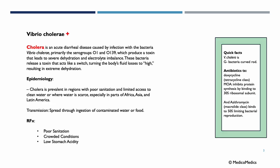Cholera is an acute diarrheal disease caused by infection with the bacteria Vibrio Cholera, primarily serogroups O1 and O139. These produce a toxin that leads to severe dehydration and electrolyte imbalance. Serogroups refer to distinct groups of Vibrio Cholera classified by differences in their surface antigens, and O1 and O139 are the only ones known to cause large cholera outbreaks.